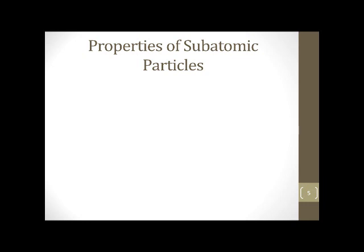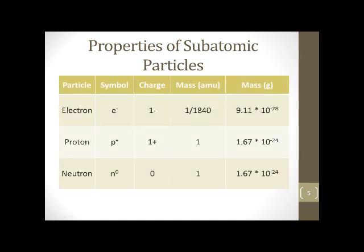All right, so this is an important table to copy down. All the symbols. So, an electron, the symbol is E minus. I'll frequently draw it like so, just a circle with a minus. I usually try to do it as small as I can. It has a negative one charge. And its mass in amu, it's one divided by 1840. And one amu is the mass of one proton. Its mass in grams is 9.11 times 10 to the negative 28th grams. Really, really tiny.